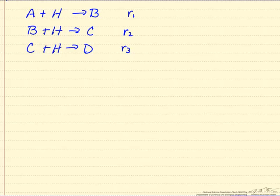So we can write the rate that species A forms, and it's minus R1, minus because it's a reactant. The rate of B, well B is involved in two reactions, so R1 minus R2.